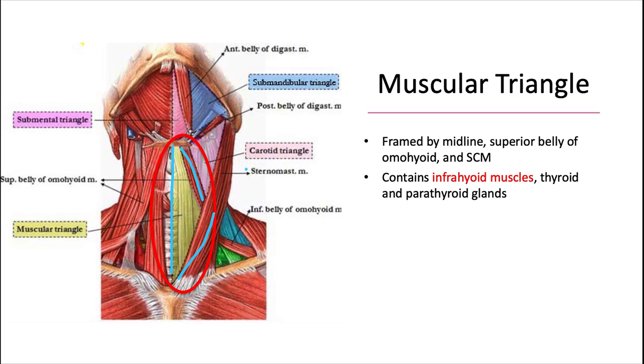This one contains the infrahyoid muscles, the muscles below the hyoid bone. We'll talk more about those later, as well as the thyroid and parathyroid glands.